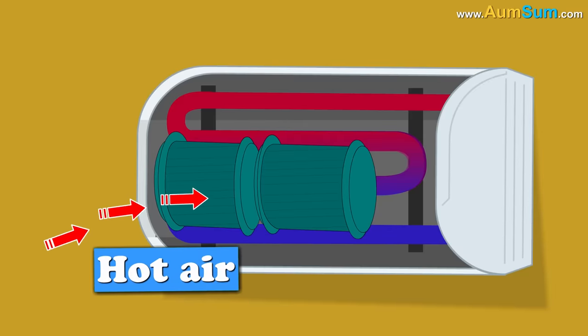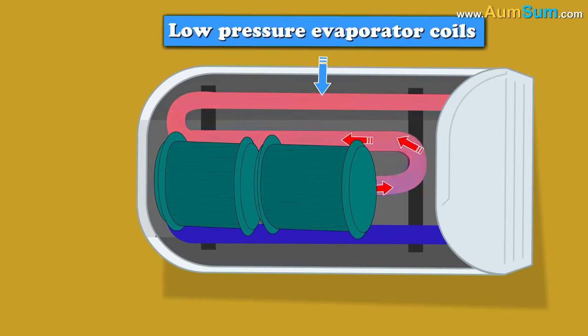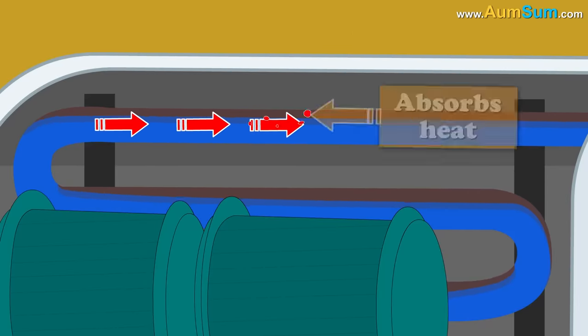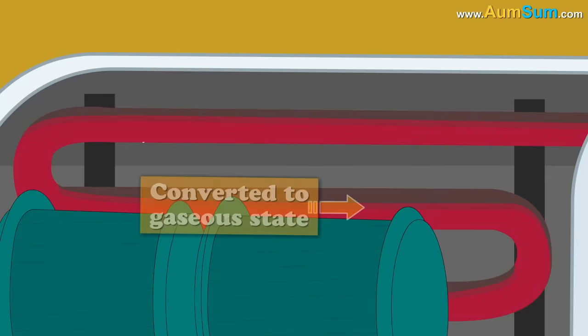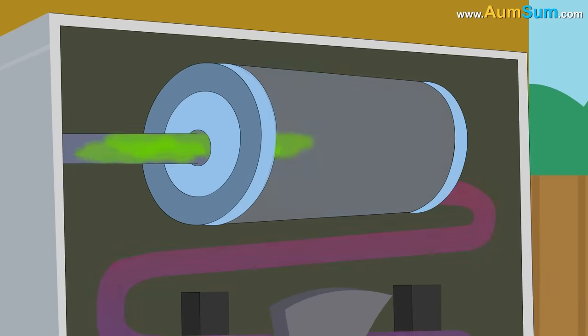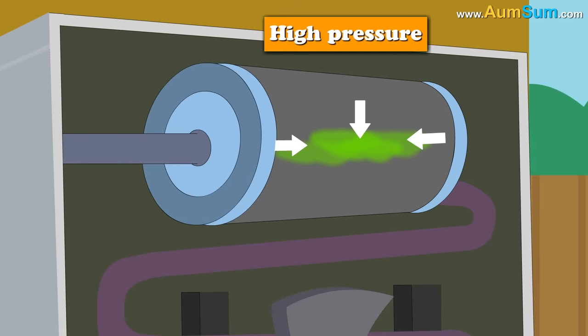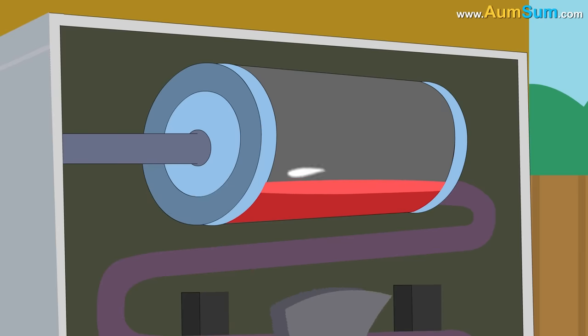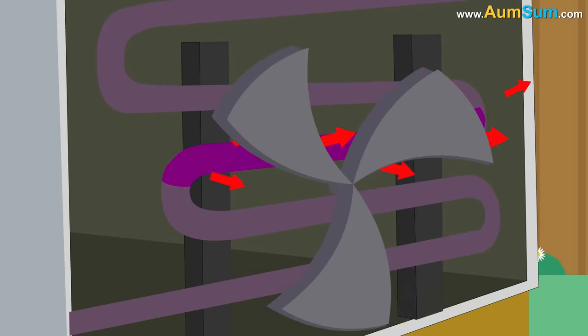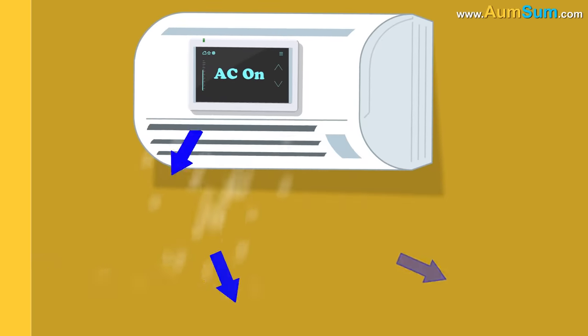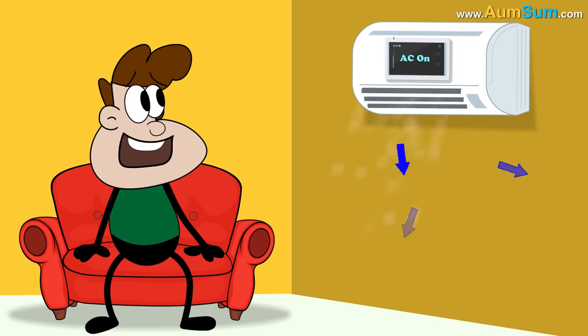When hot air from the room flows over the cold, low pressure evaporator coils, the liquid refrigerant which is present inside the coils absorbs this heat and starts getting converted to gaseous state. Now, this gaseous refrigerant passes through the compressor which puts it under high pressure and converts it back to liquid state. The extra heat which is generated during this process is let out using the condenser coils and an outdoor fan. This cycle keeps on repeating itself. This is how an air conditioner works and our rooms remain cool.